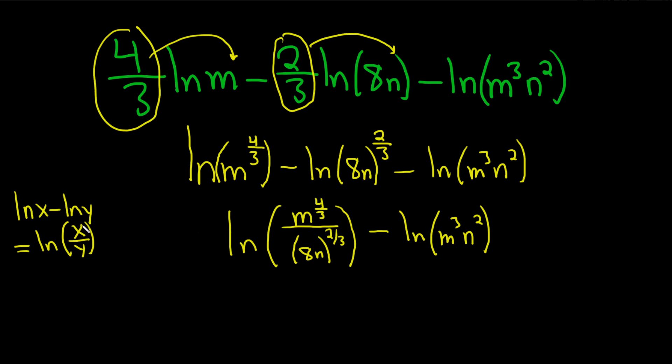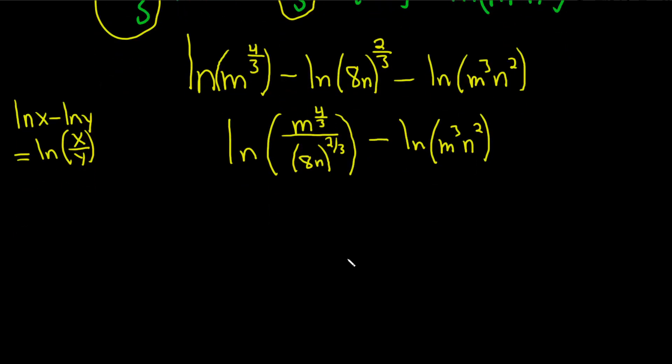So now we can go ahead and use this property again. Or we can simplify this a little bit. I'm kind of leaning towards simplifying this just a little bit because it's bothering me. So let's do that. So if you have 8n to the two-thirds, I'm just going to write it over here and just do the simplification on the side.